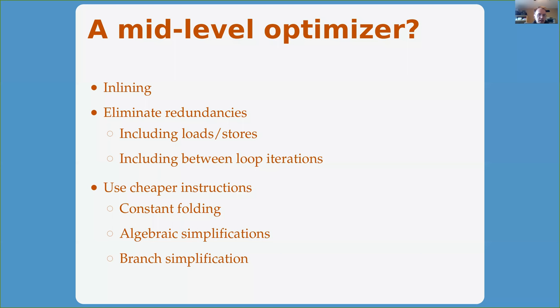Looking forward to high-level optimizations we might do in the future: the first thing we need to figure out is inlining. Some call it the mother of optimization, others call it the poor man's inter-procedural analysis. Inlining is what makes it possible to do a lot of optimization in Rust, where so many abstractions are just function calls expected to be collapsed into small inline sequences. Currently the code generator is organized around one function at a time, so it's not well positioned for inlining. We'd need to add another middle-level optimizer layer that can think about multiple functions and inline one into another.